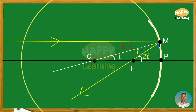Draw a normal from point M onto the principal axis, and let the foot of the perpendicular be N. The distance from C to P — center of the sphere to the pole — is the radius of curvature, represented by R. The distance from F to P — focus to pole — is the focal length, represented by the letter F.